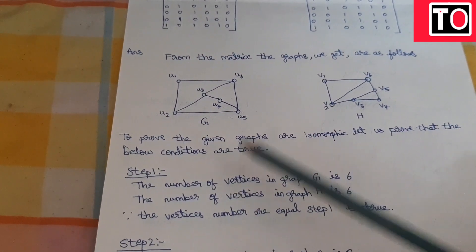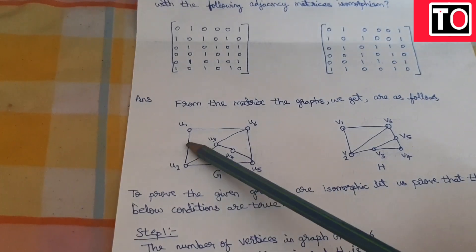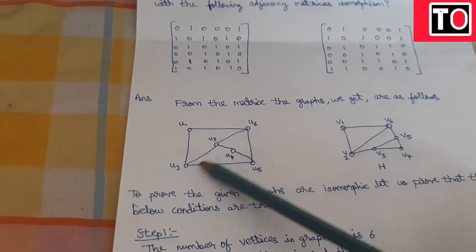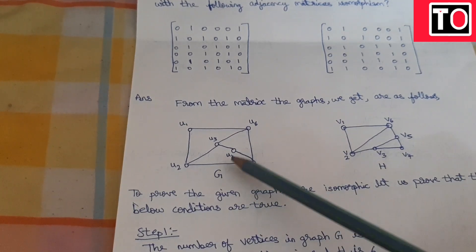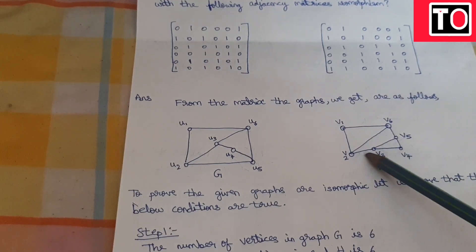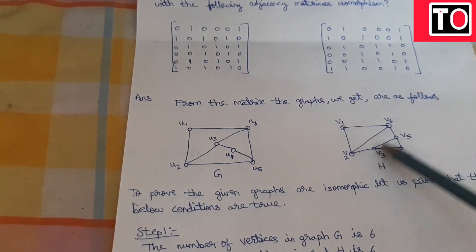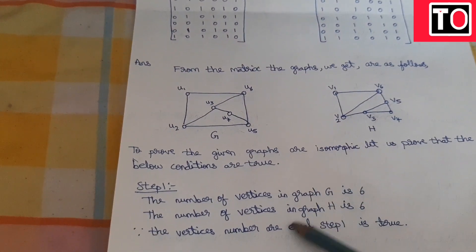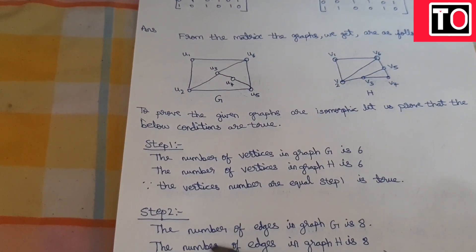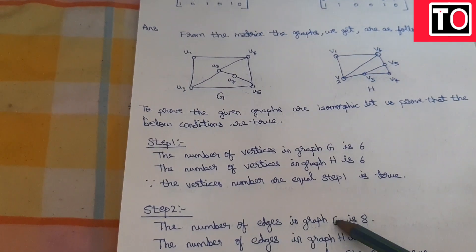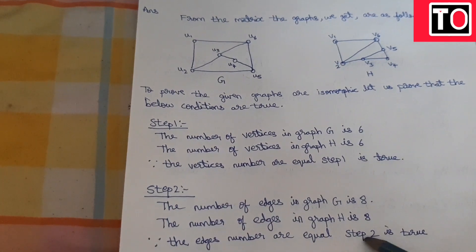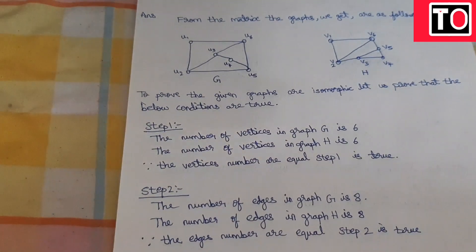Step 2: Number of edges. Counting the edges in graph G: 1, 2, 3, 4, 5, 6, 7, 8 — a total of 8 edges. The number of edges in graph H is also 8. Since the number of edges are equal, Step 2 is satisfied.